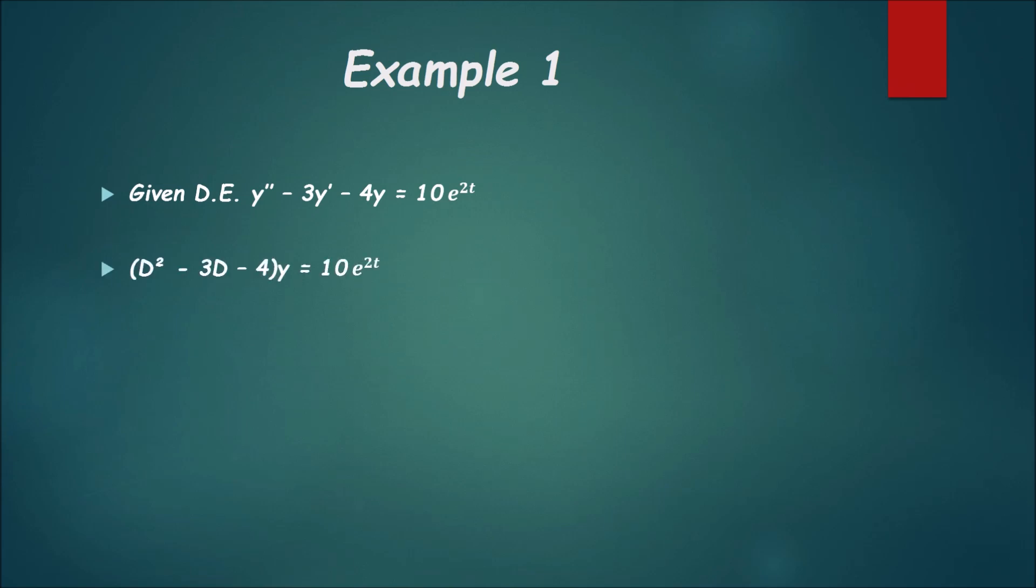First thing we want to do is put this differential equation in its operator form. What I mean by that is d squared minus 3d minus 4 times y equal to 10e to the 2t. Where do those d's come from? The d represents derivative. So if I were to say capital D times y, that means that's the derivative of y, which is y prime. When I say d squared times y, that means I'm taking the derivative of y twice, giving it y double prime.